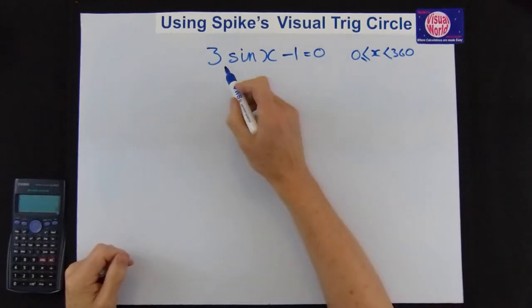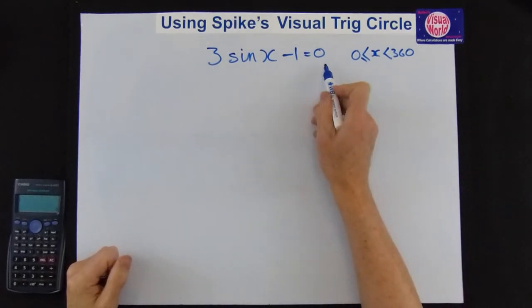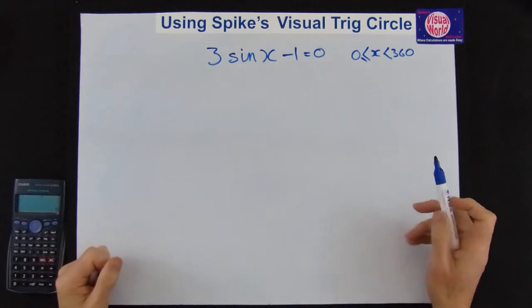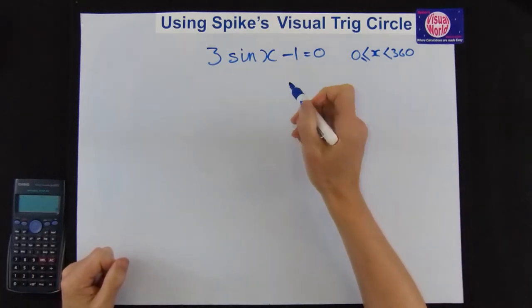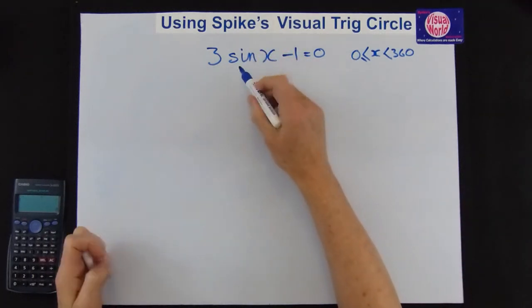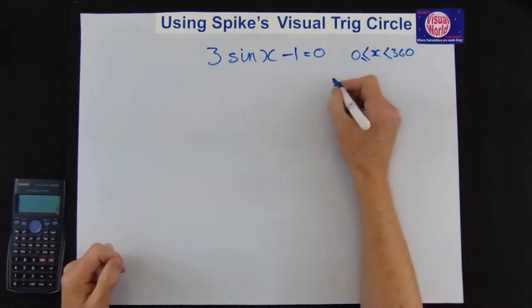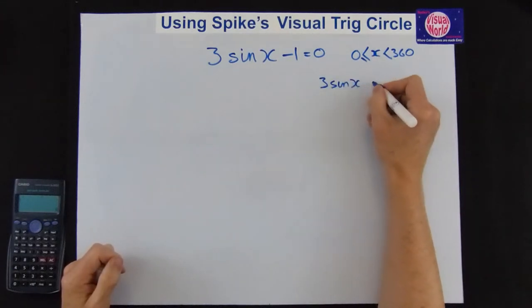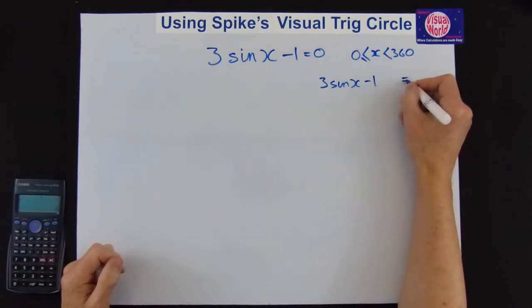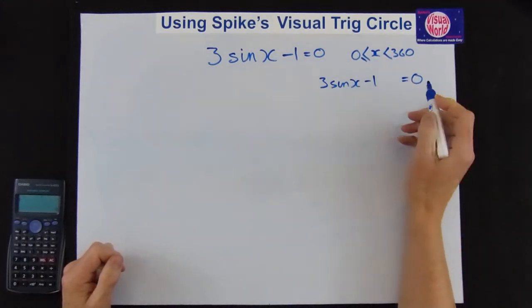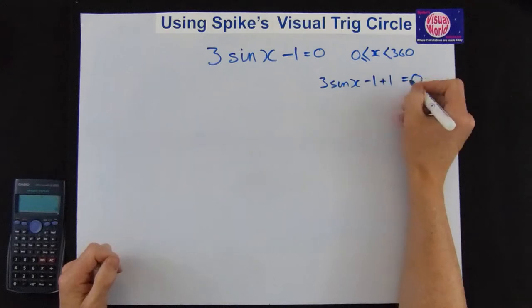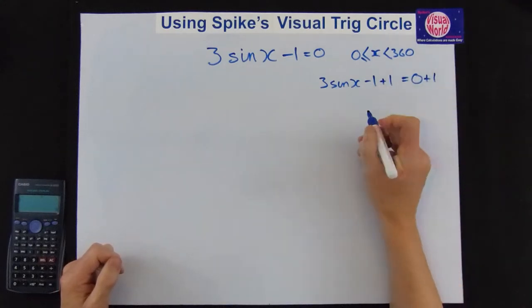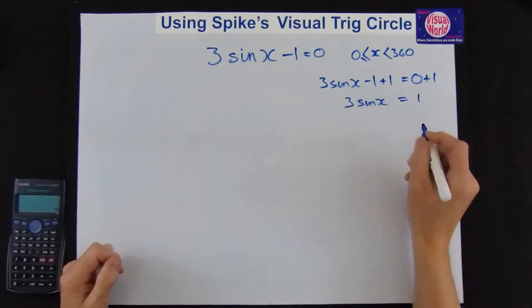The equation we have this time is 3 sin x minus 1 equals 0. So we start off the same way. We treat the sin x as if it's just x. And it makes it a really easy equation to start with. We've got 3 sin x minus 1 equals 0. We've got to get rid of the minus 1. Do the opposite. Plus 1. Do it to both sides.